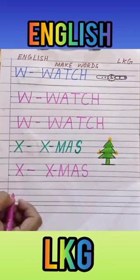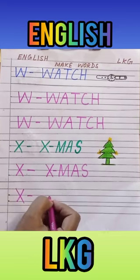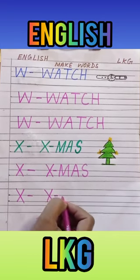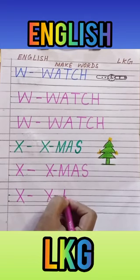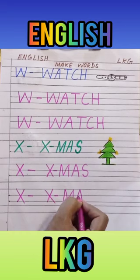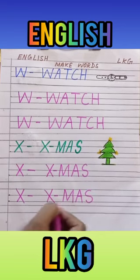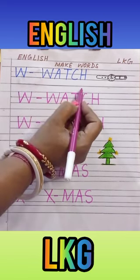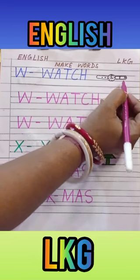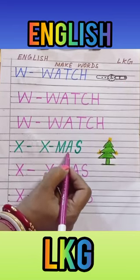W, A, T, C, H. For Xmas. Once again. A, S. Xmas. W for watch, W-A-T-C-H. Watch means Ghadi. X for Xmas, X-M-A-S.